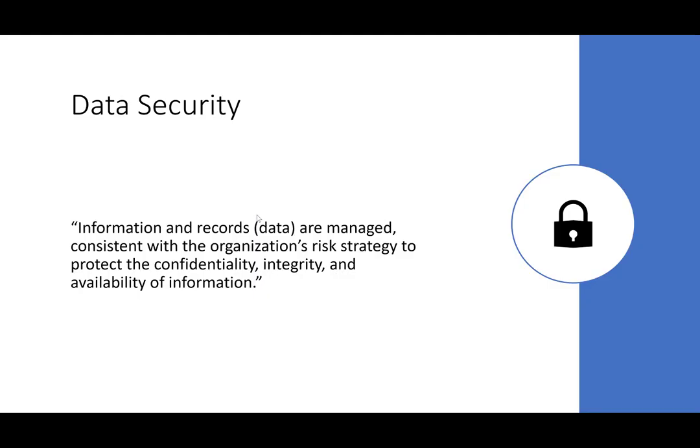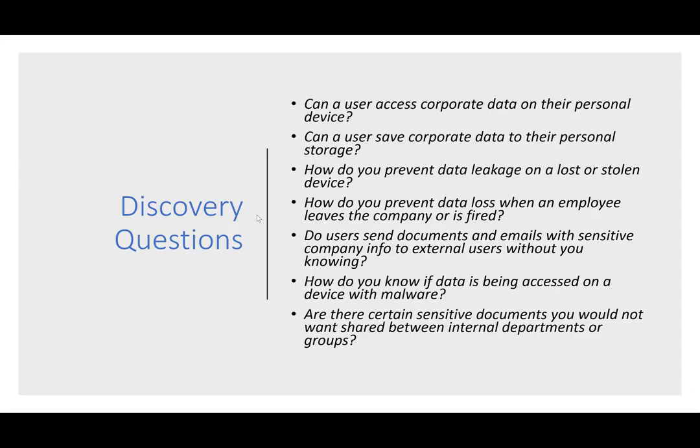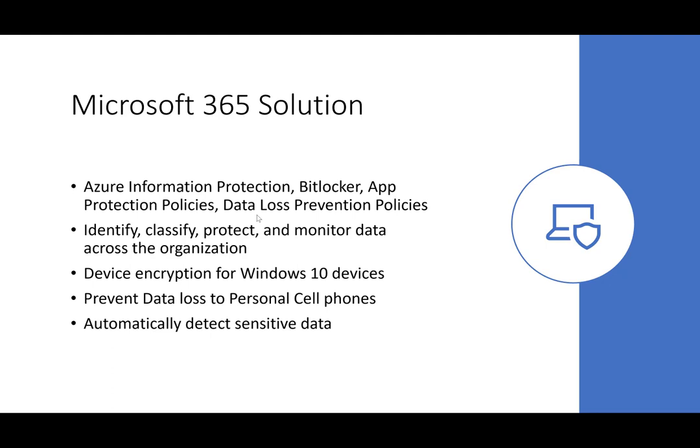The next category is Data Security: information and records data are managed consistent with the organization's risk strategy to protect the confidentiality, integrity, and availability of information. There are tons of controls in the M365 business solution relating directly to data loss, but you really want to make the customer understand where they're exposed. Understand where they're accessing data, what applications have sensitive data, and how they're accessing it. If it's in an insecure manner, address it. Most people aren't considering the fact that they're free to save documents to personal locations or cut, copy, and paste into personal locations.